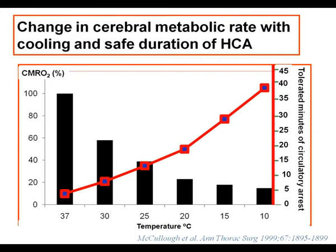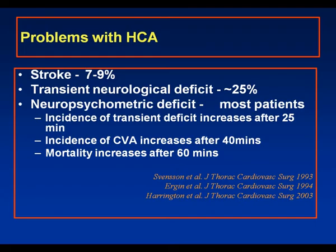We know now that HCA alone is not compatible with good results for the majority of patients. There is an important stroke risk, a very important transient neurological deficit risk, and neuropsychometric deficit occurs in most patients. The incidence of transient deficit increases after 25 minutes of deep hypothermia, and the incidence of stroke and mortality increase after 40 and 60 minutes respectively.